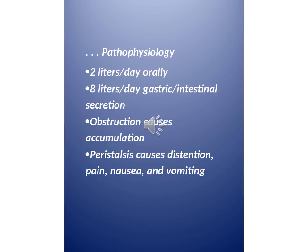Pathophysiology: approximately 2 litres per day taken orally, plus 8 litres per day of gastric and intestinal secretion. Obstruction causes accumulation. Peristalsis causes distension, pain, nausea, and vomiting.